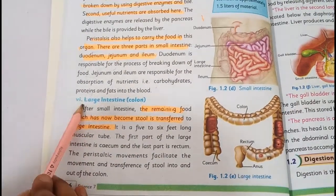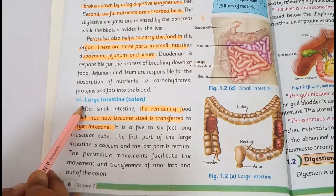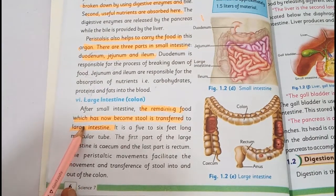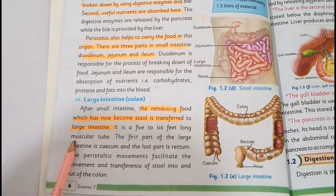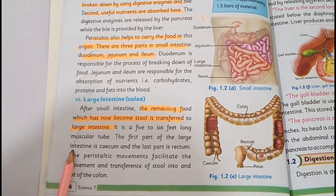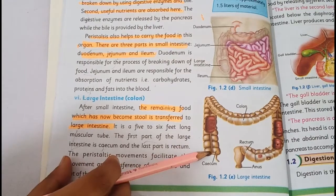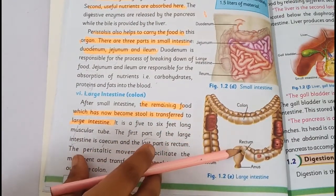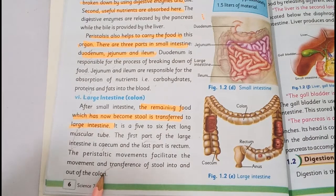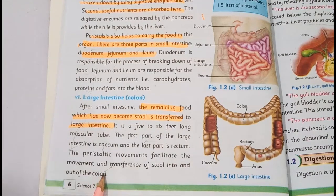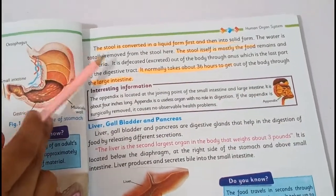The next part is large intestine. The remaining food which has become stool is transferred to the large intestine. Large intestine is 5 to 6 feet long and is a muscular tube. First part is cecum and the last part is rectum. The peristaltic movement facilitates the movement and transfer of stool into and out of the colon, so unwanted material is excreted from the body.